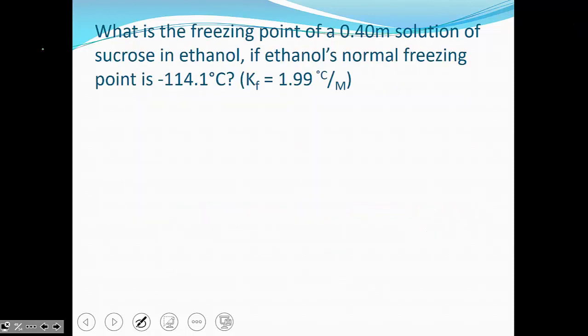So calculate the freezing point of a 0.4 molar solution of sucrose in ethanol, if ethanol's normal freezing point is negative 114. So this is the freezing point normally. We need to calculate how the temperature changes and subtract from that value. So delta T equals M-K-I.